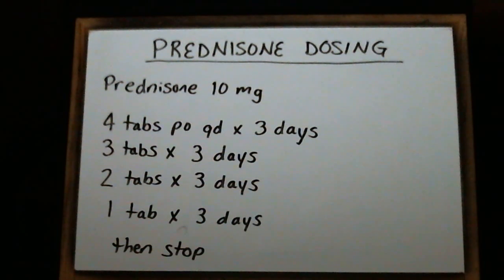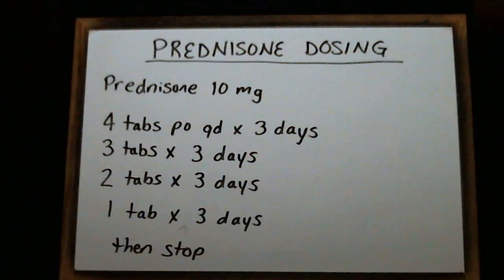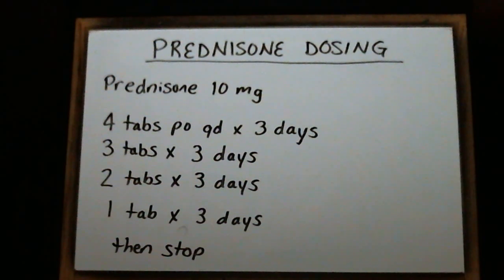We taper the dose in order to prevent suppression of the HPA axis. If we don't do this and we keep people on high doses and then quickly take them off, their HPA axis will not recover for a little while following discontinuation of the dose. So tapering the dose helps prevent that HPA axis suppression.